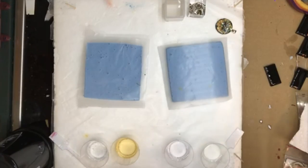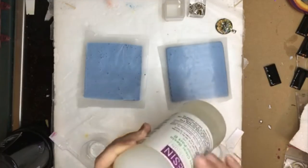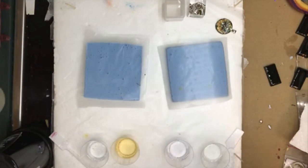The other resin I'm using is the Resin Obsession Super Clear Resin, which is a casting resin. So we're working with a doming resin and we're working with a casting resin.